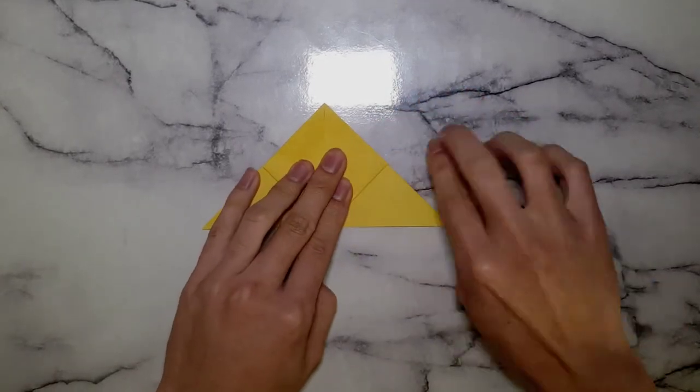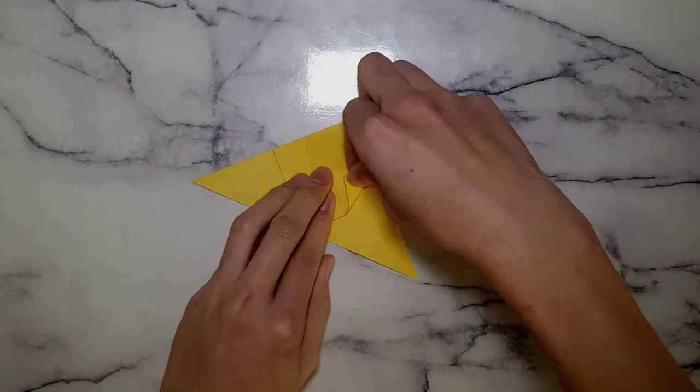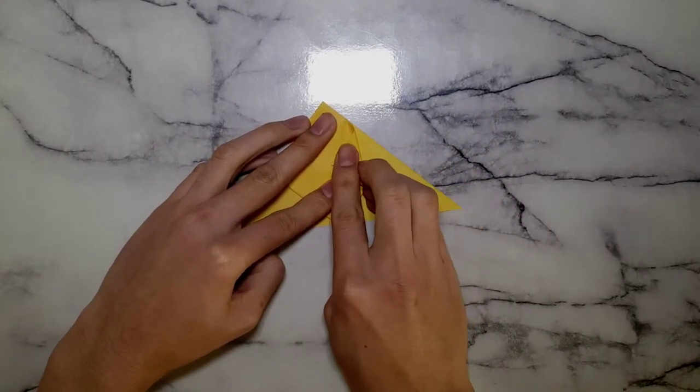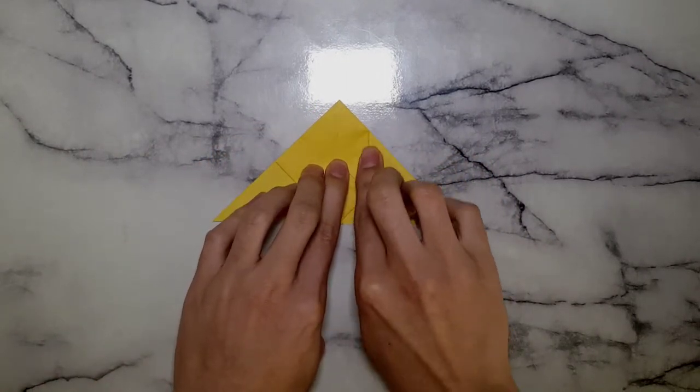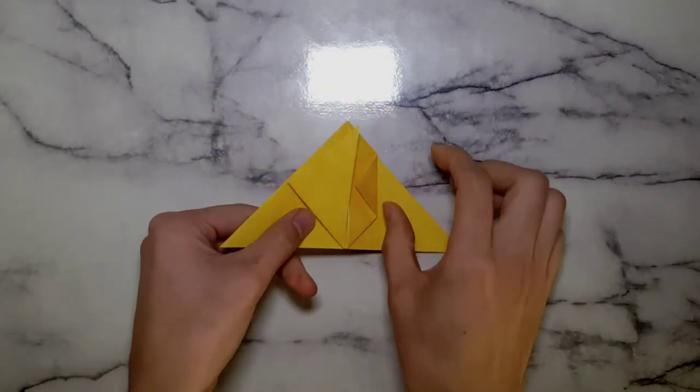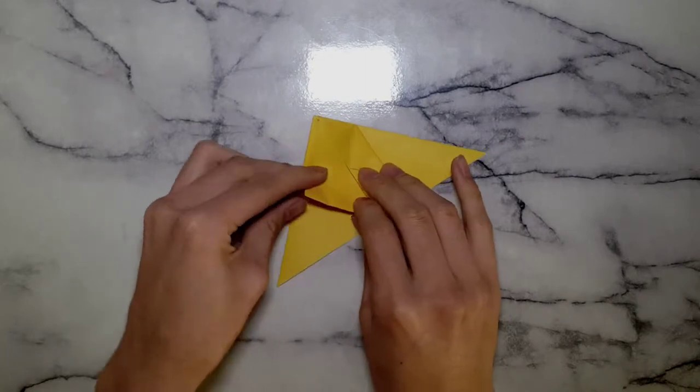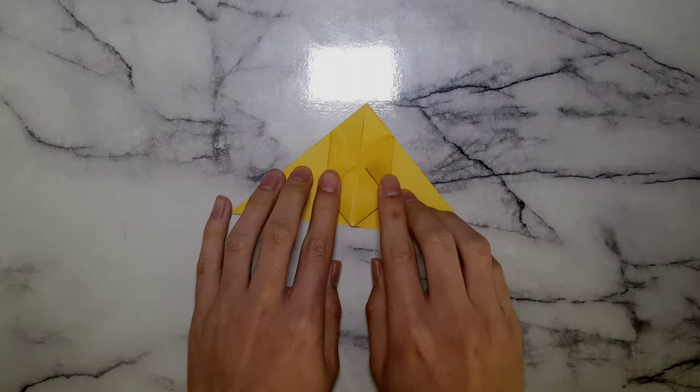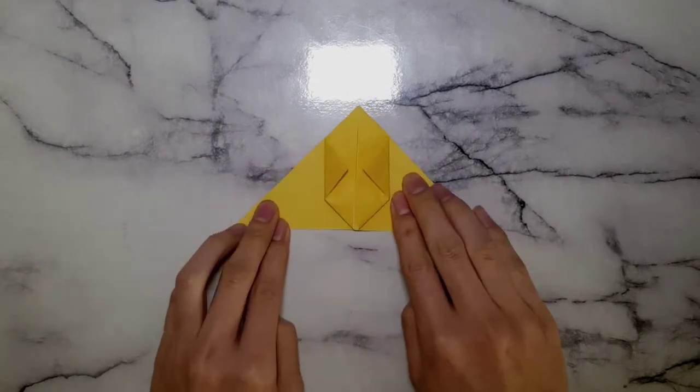Once we've done that, we're going to bring in the two corners from the sides. So on the right side, we're going to bring that in to meet the middle crease. And we're just going to fold it. So it should look like that. It shouldn't go beyond the middle line. And then we're going to do the same with the other side. It should look like that.